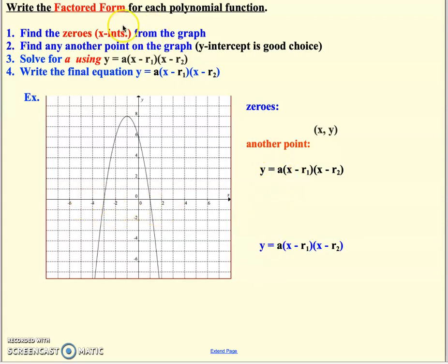Going to my graph, there's some good steps here for us to start. First, I look for my zeros. My zeros are my x-intercepts, so those are my r1 and r2. One at negative 3 and one at positive 1.